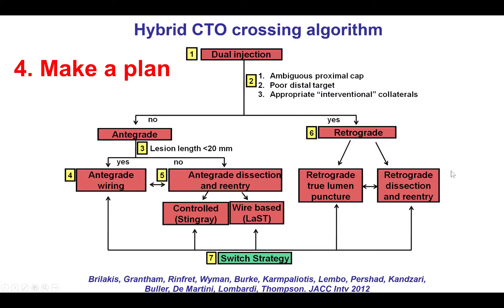The fourth key principle is to make a plan based on review of the diagnostic angiogram. There are different algorithms that can be used for that, such as the hybrid algorithm shown here. There is also the Asia-Pacific algorithm, and every operator can fine-tune or make adjustments. In general, patients with an ambiguous cap or small diffusely diseased distal vessels and good collaterals are candidates for an upfront retrograde approach. In other cases, antegrade is the way to go — with longer lesions favoring earlier use of antegrade dissection re-entry, and shorter lesions favoring antegrade wiring. For every case, it is important to change strategies if the initial strategy fails.